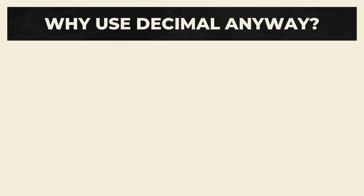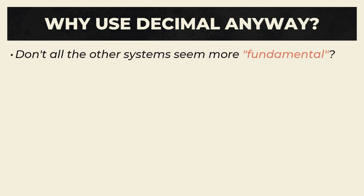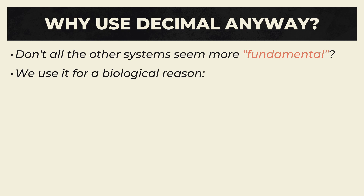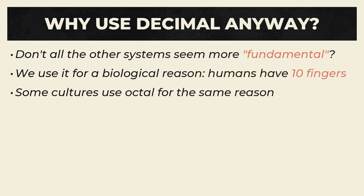All of these other number systems have begged the question: why do we even use decimal? Binary and hexadecimal seem much more fundamental. And it's true — using decimal as our system is quite arbitrary. In fact, the reason we use it isn't mathematical, it's biological. Humans have 10 fingers, hence base 10. For the same reason, some cultures use octal, presumably because they didn't count with their thumbs, leaving 8 fingers.